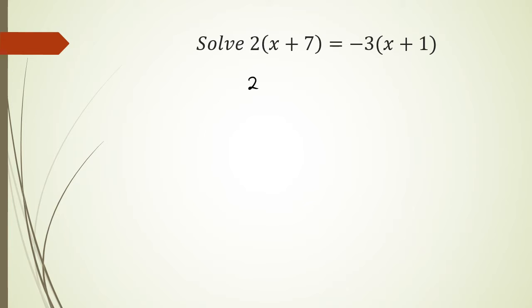So I've got 2, let me write this up first, so 2(x+7) = -3(x+1). So expanding it out, I've got 2 times x which is 2x and then I have 2 times positive 7 which is positive 14.